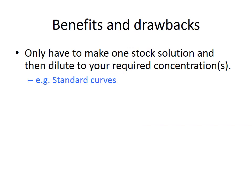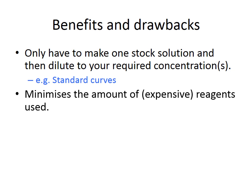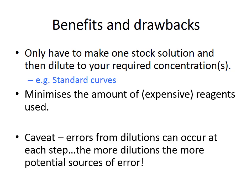There are benefits and drawbacks to serial dilutions. One benefit is that you only need to make one stock solution and dilute from that, as you would when creating a standard curve. A second benefit is that it minimises the amounts of potentially expensive reagents used. The drawback is that every dilution step introduces sources of error, and those errors become compounded — the more dilutions you have, the more potential sources of error you are introducing.